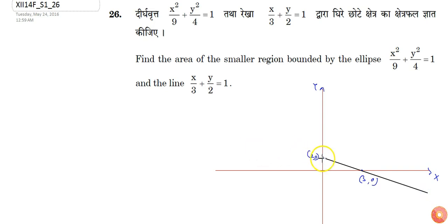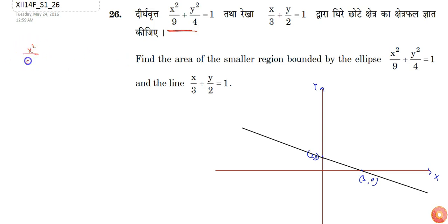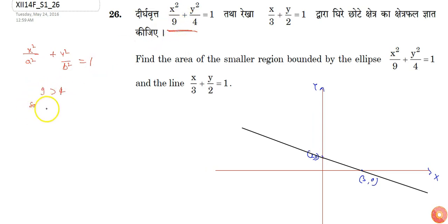This is the given line. Now, for the given ellipse, if I compare it with the standard ellipse, which is x squared by a squared plus y squared by b squared equals 1, since here 9 is greater than 4, I can say that the ellipse major axis will be along the x-axis.